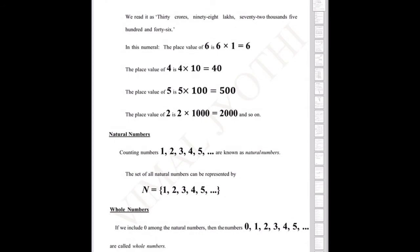Natural numbers, or counting numbers — 1, 2, 3, 4, 5 — are known as natural numbers. It is denoted by the letter N. Capital N equals 1, 2, 3, and so on. These are called natural numbers.